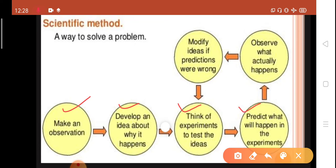While doing that, we predict what will happen in the experiment. And we continue observing what actually happens. And at last, if our predictions become wrong, we modify the ideas and again test, again do the experiments, predict, observe.